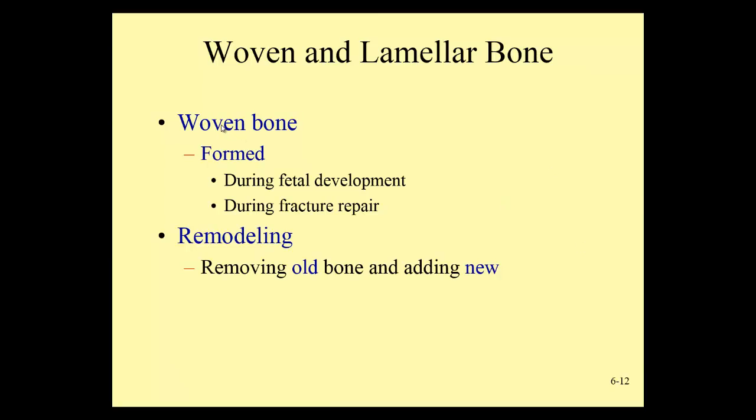Woven bone is a very thin, fragile, early type of bone that will be formed early in fetal development or when you are repairing a fracture. As that site is rebuilt, the early bone is woven bone — a more fragile bone that cannot withstand a lot of stress or pressure. We'll talk more about this and I'll show you some pictures in future slides.